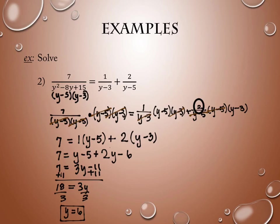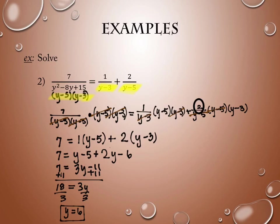Six won't do that. If I plug 6 into y minus 3, I get 3. If I plug 6 into y minus 5, I get 1. So I'm good to go. I want to make sure I don't actually find that the answer is an excluded value, so I have to check it against the original denominators.